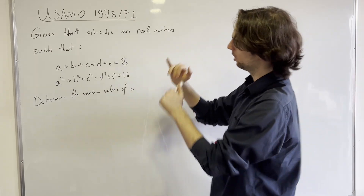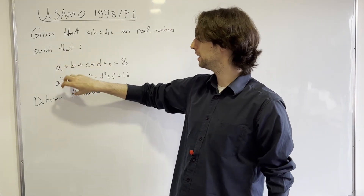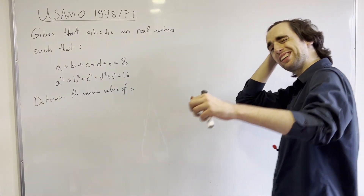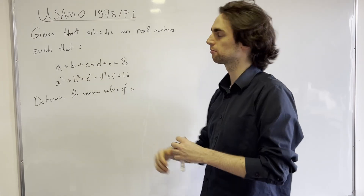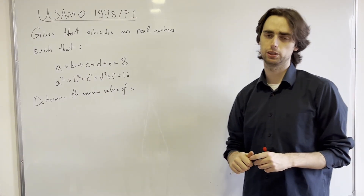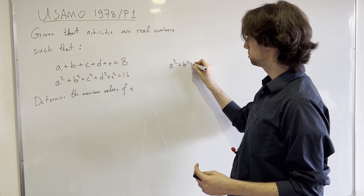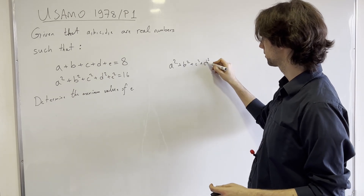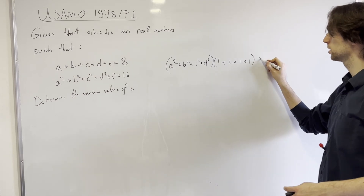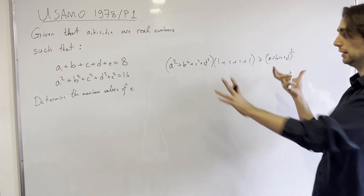If e is large, what relationship do a plus b plus c plus d, and a squared, b squared, c squared, and d squared need to satisfy together? Pause for like three to five minutes and try to think about that. The answer is there's one relationship they really need to satisfy, and the relationship is that a squared plus b squared plus c squared plus d squared — we can get this by Cauchy-Schwarz — times one plus one plus one plus one is greater than or equal to (a plus b plus c plus d) squared.